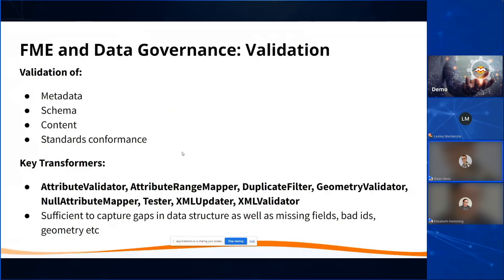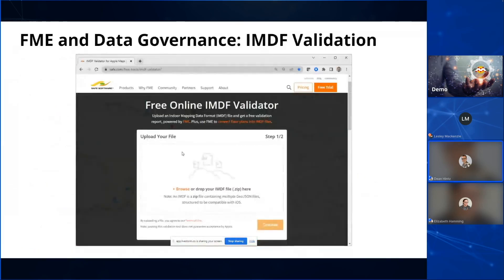We cover validation of metadata, schema, and the data content itself. Key transformers include the Attribute Validator, Geometry Validator, and Tester. There are lots of tools to support data validation, and we have some great examples on our knowledge base.